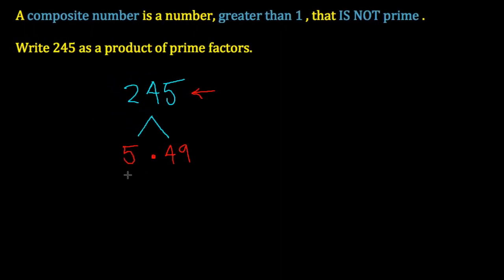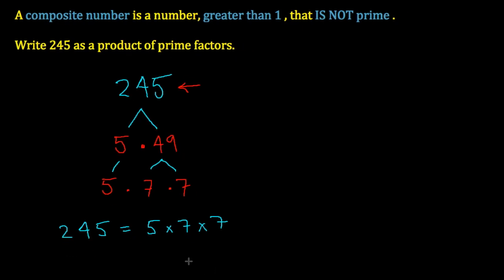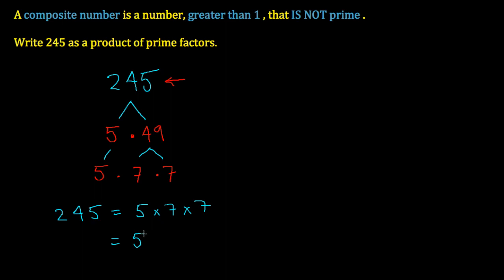5 times 49 gives us 245. We know from our earlier discussions that 5 is prime, so we leave that alone, but we recognize that 49 was not in our group of prime numbers. So we can break 49 down into 7 times 7. In the end, we write that 245 is the product of 5 times 7 times 7. That is the prime factorization of 245, which can be written more compactly as 5 times 7 to the exponent 2 — meaning 245 is built from one 5 multiplied by two 7s.